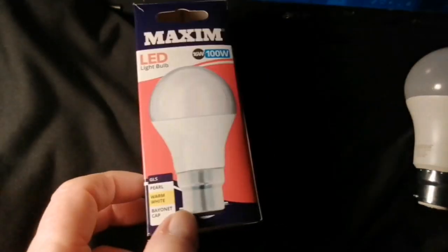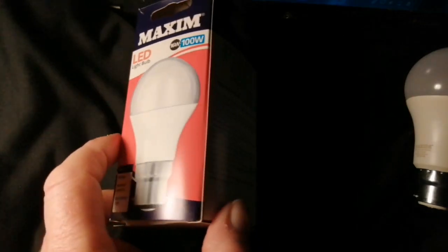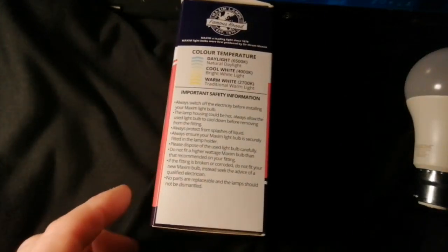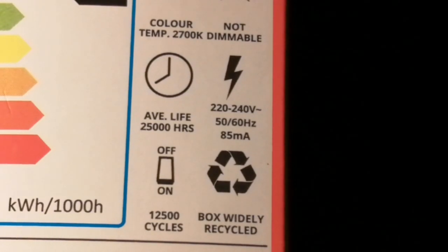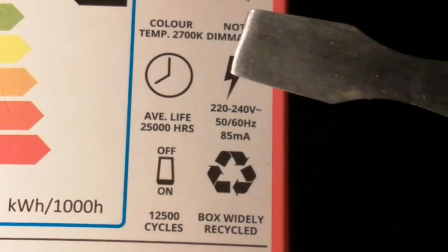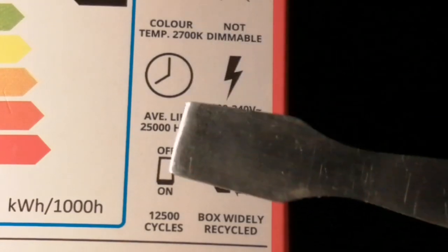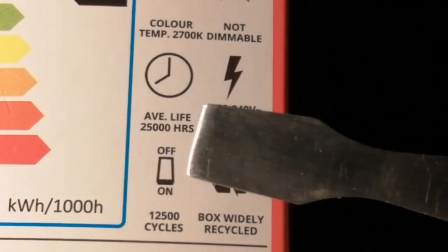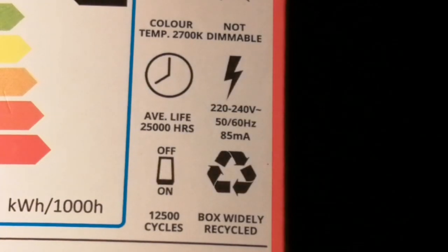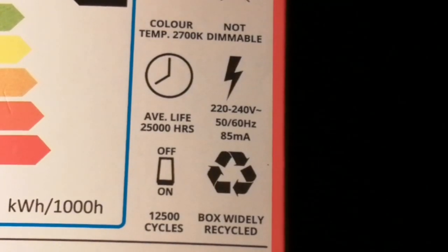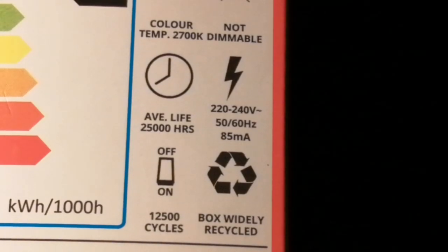All six have now died, so I've gone back to the good old incandescent bulb. The box says that the average life is 25,000 hours and it's good for 12,500 switch-on cycles. Well, as I only switch the light on twice a day for a total time of about two hours, that equates to almost 18 years. So any one of these bulbs should have outlasted me.